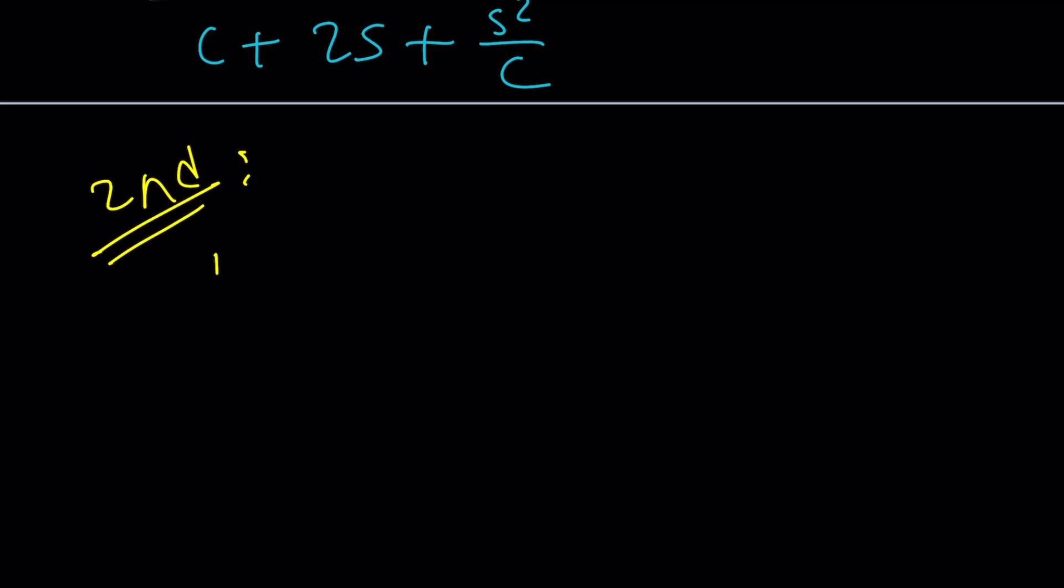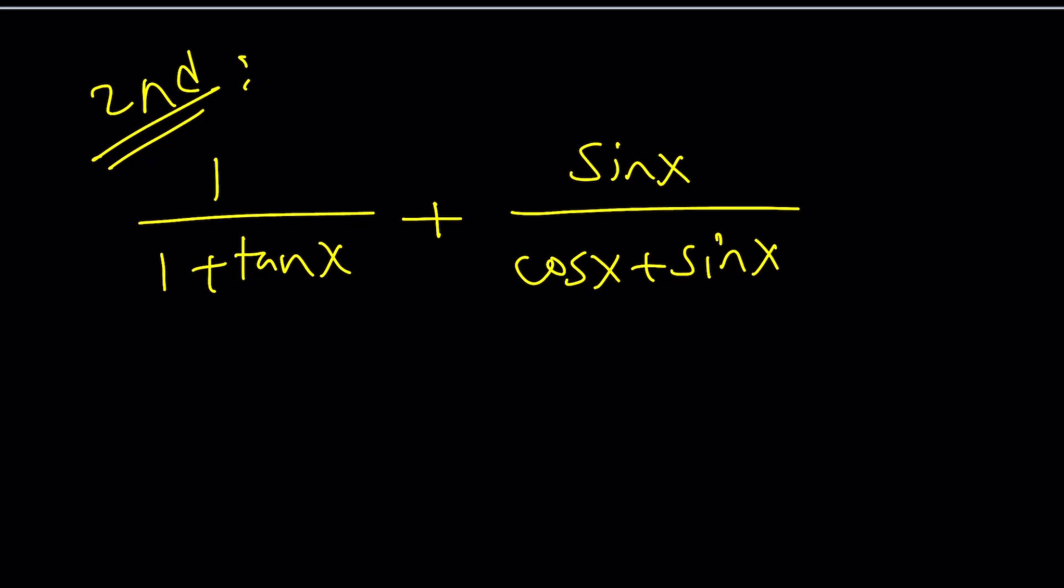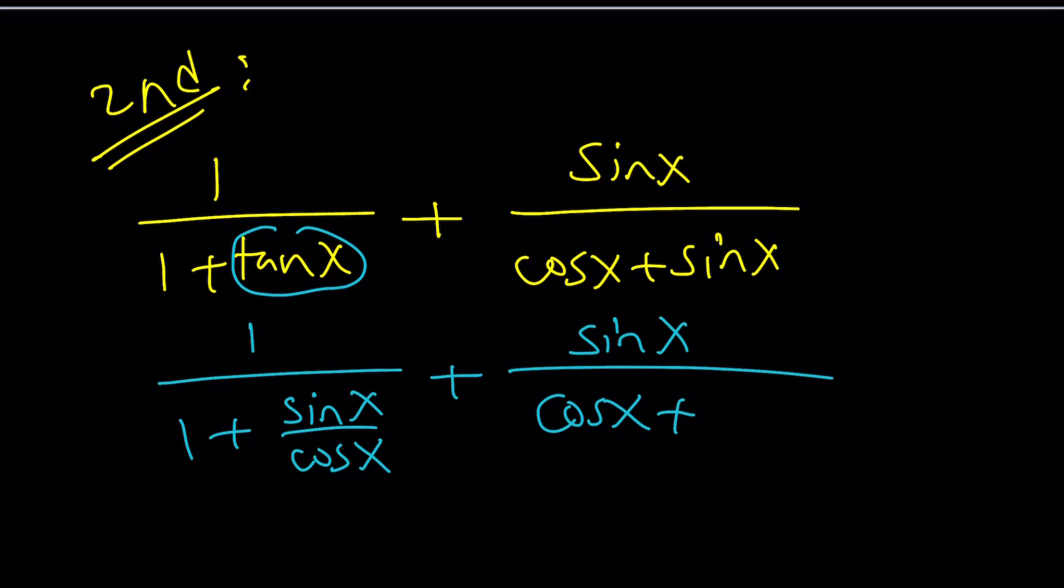So I have 1 over 1 plus tangent x, plus sine x over cosine x plus sine x. Great. So for my second method, I'm not going to make a common denominator. Instead, I'm going to replace tangent x with sine over cosine right away. Let's do it. Again, you can use the CS convention if you want. It's totally up to you. I'm not going to use it. It's not too bad.